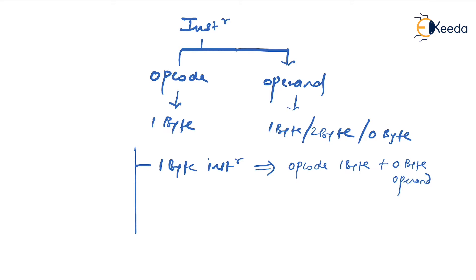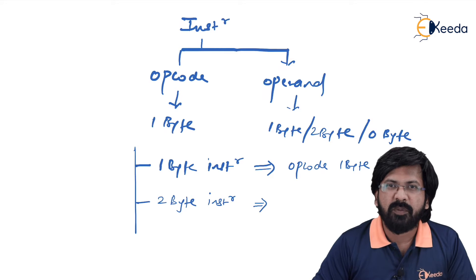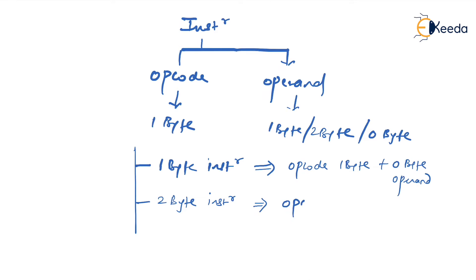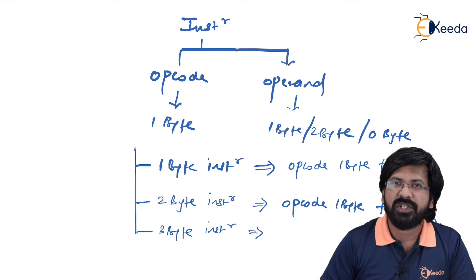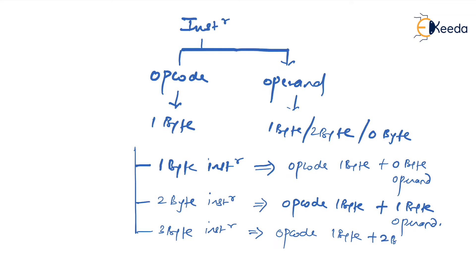A 1-byte instruction has only 1 byte of opcode plus 0 bytes of operand. A 2-byte instruction has 1 byte opcode and 1 byte operand. For a 3-byte instruction — remember, opcode cannot be more than 1 byte, so the breakup is 1 byte opcode and 2 bytes of operand.